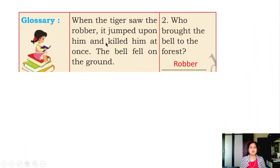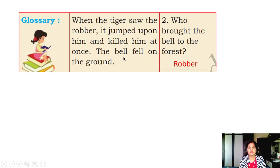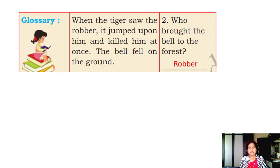When the tiger saw the robber, it jumped upon him and killed him at once. The bell fell on the ground. The tiger saw the robber, jumped upon him, and killed him. The bell fell on the ground in the forest. Who brought the bell to the forest? The robber brought it to the forest.